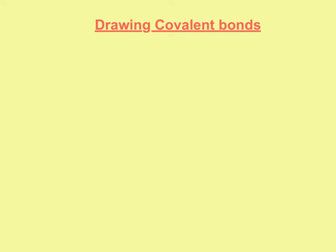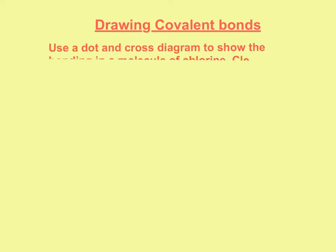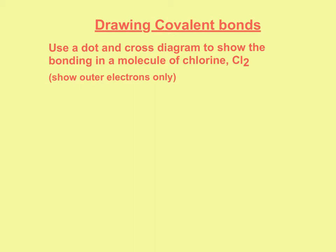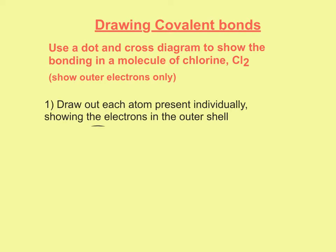So what we're going to look at here is how to draw covalent bonds. A very typical exam question would say use a dot-cross diagram to show the bonding in a molecule of chlorine, Cl2, and it will say to show outer electrons only. The reason for this is that if you draw all the electrons it becomes very messy with all the inner shells in there. So the first thing we have to do is draw each atom individually and show all the electrons in the outer shell.